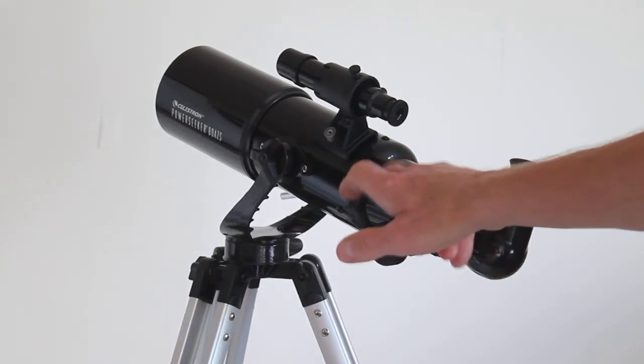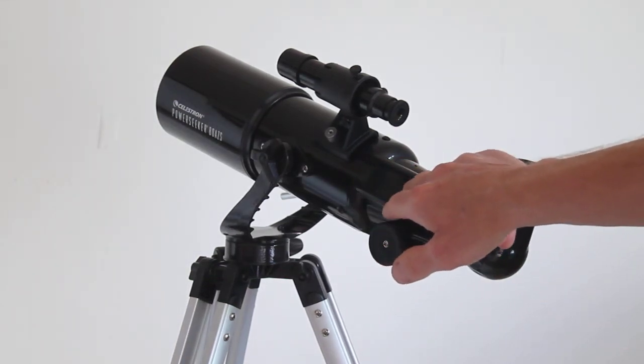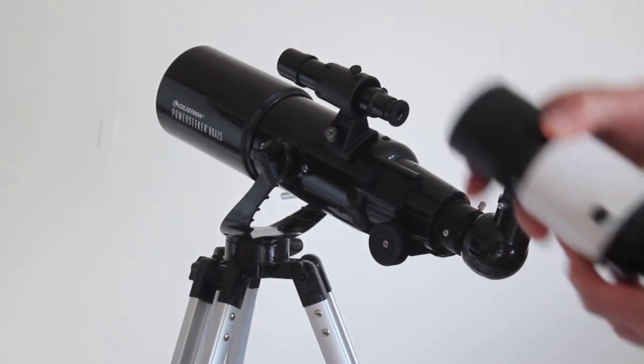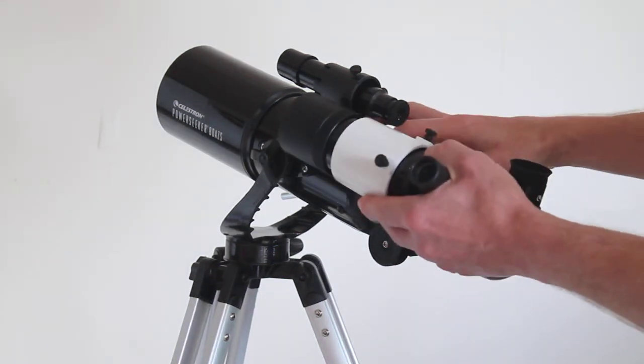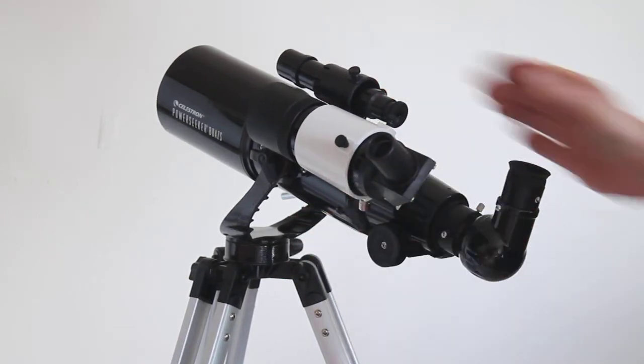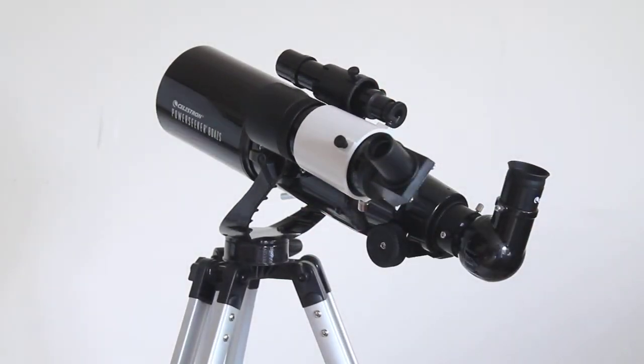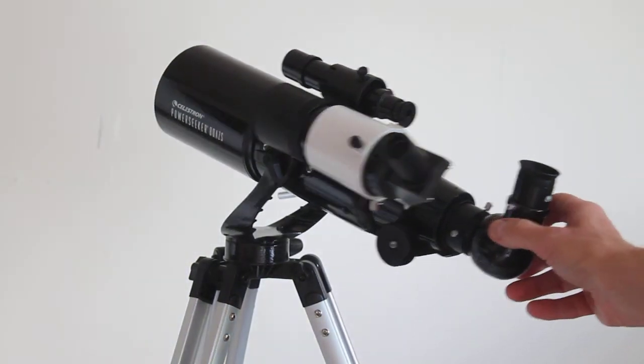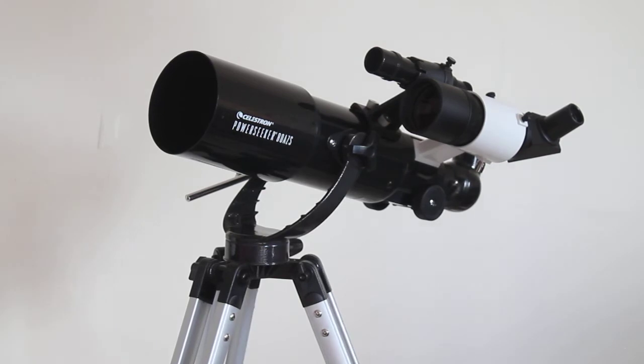But also down here it has a hot shoe connection so you can put many more finder scopes on the telescope. And here I have a Sky Watcher 9x50, and all of a sudden that has just transformed the telescope into a very nice piece of kit.